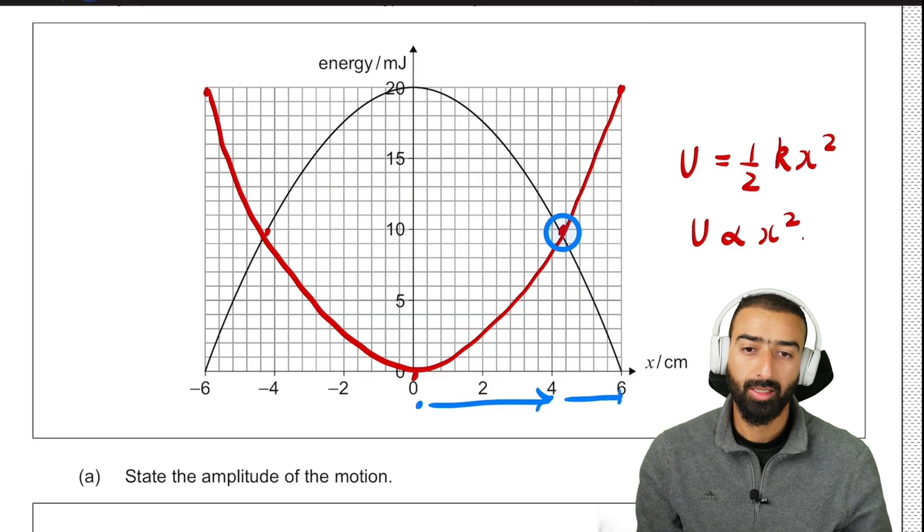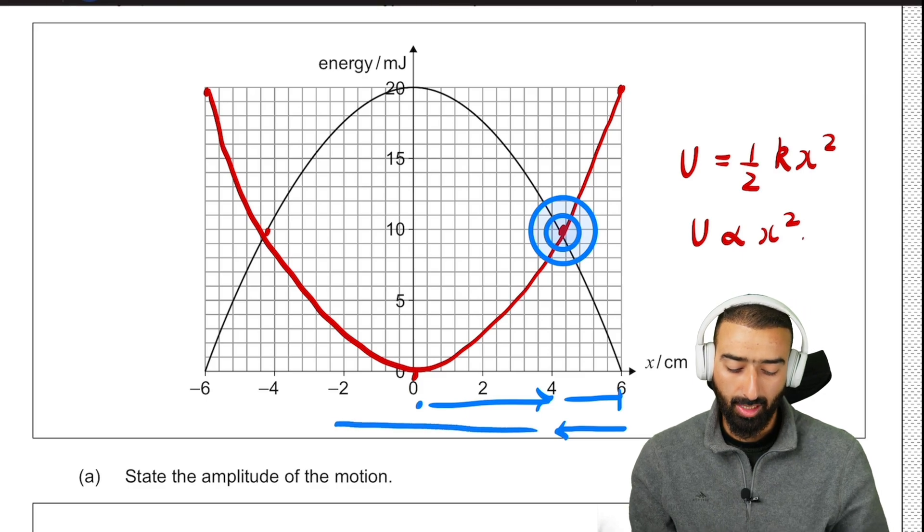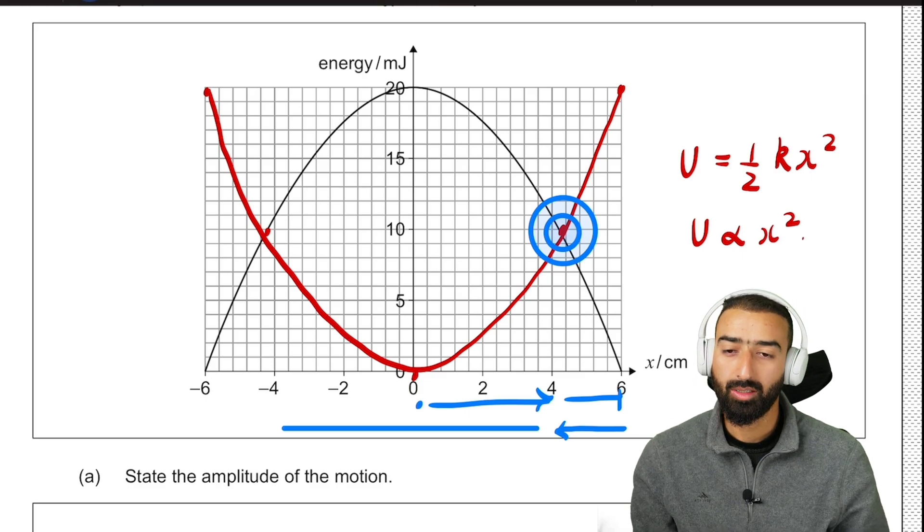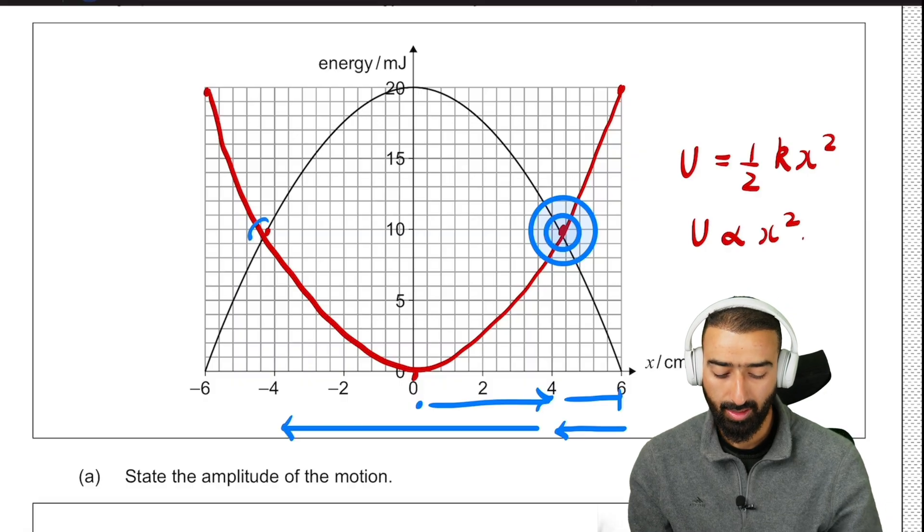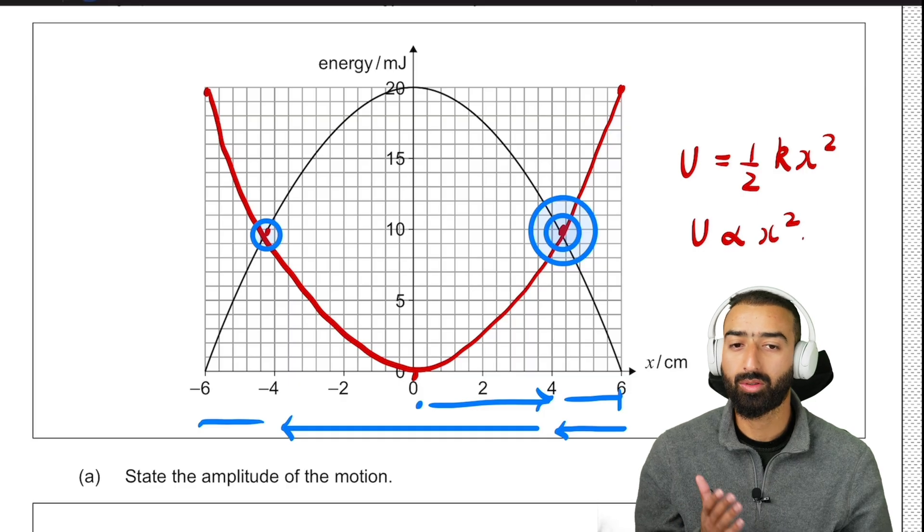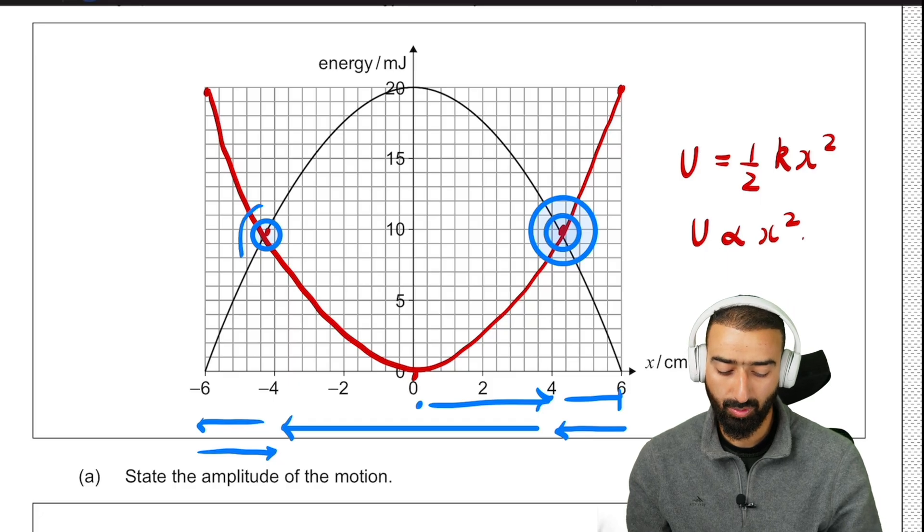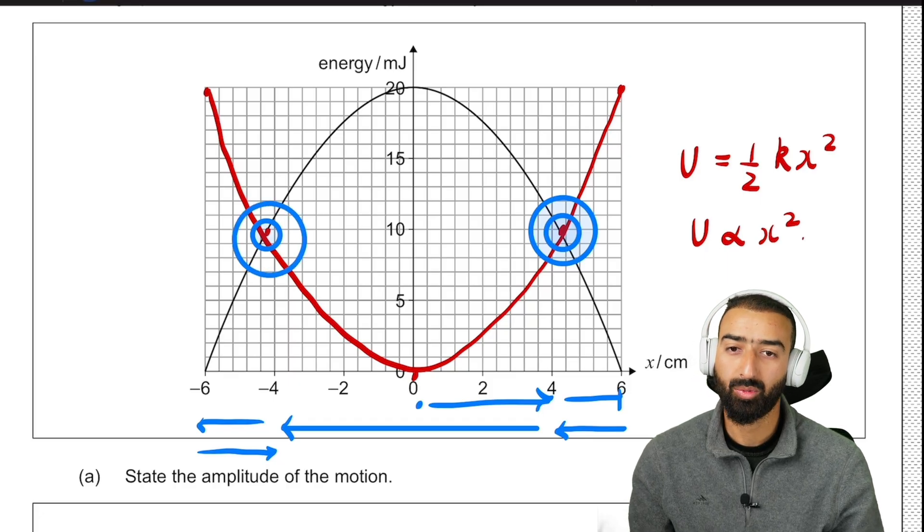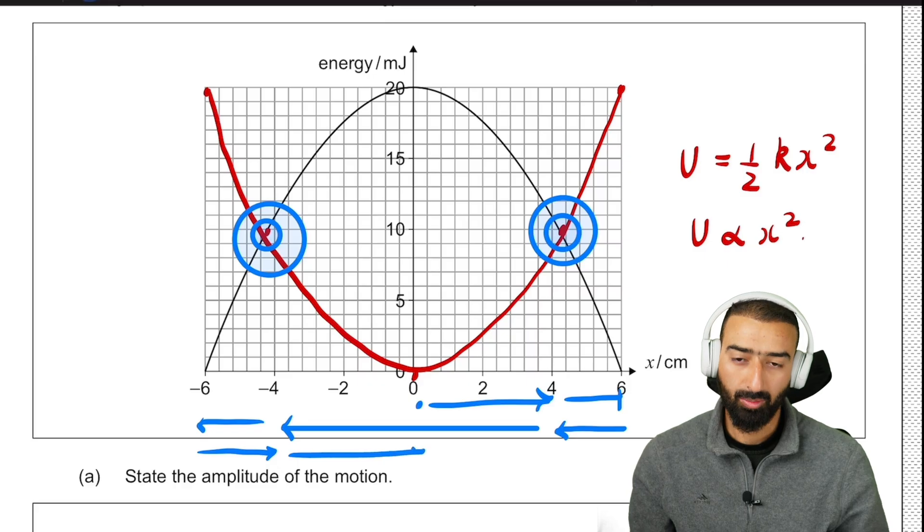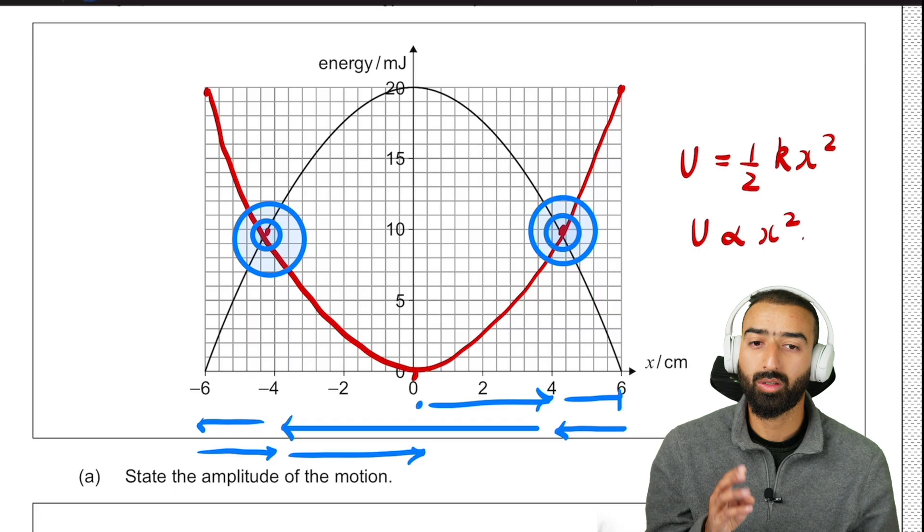It moves on until it hits its maximum displacement and returns. When it returns back to x equals 4, we once again have kinetic and potential equal to one another. It carries on with its journey until it reaches x equals minus 4. That's when kinetic and potential are once again equal. It carries on and goes to the negative side of its motion and returns. When it returns back to x equals minus 4, once again kinetic and potential are equal. And thus, it completes its journey where kinetic and potential are equal to one another four times.